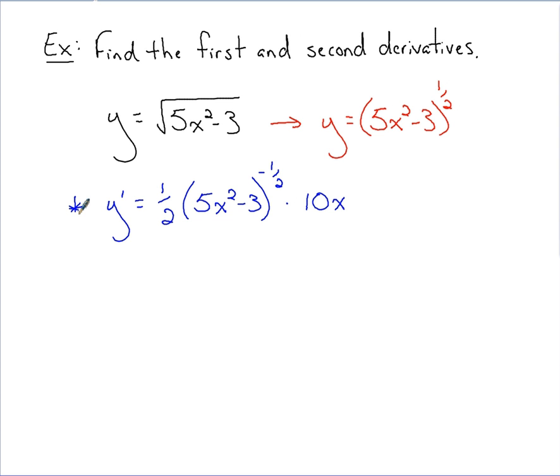Since I'm simplifying first, it's still y prime. Let's start with this one half and this 10x, since they're outside the parentheses. Let's multiply that together. If I multiply one half times 10x, I get 5x, right? And then you've got this quantity still, 5x squared minus 3, raised to the negative one half.